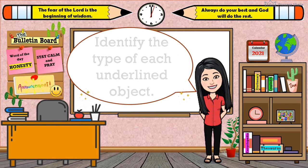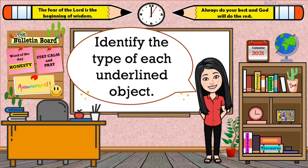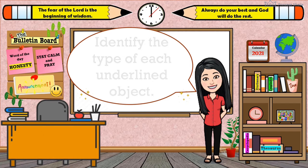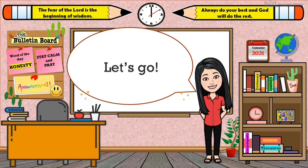Are you ready for a short quiz? You will just identify the type of each underlined object in the sentence. Let's go.